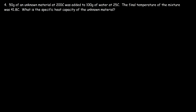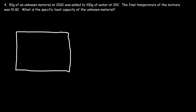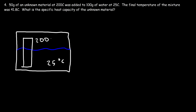Number four: 50 grams of an unknown material at 200 degrees Celsius was added to 100 grams of water at 25 degrees Celsius. The final temperature of the mixture was 41.8 Celsius. What is the specific heat capacity of the unknown material? Imagine we have a beaker of water currently at 25 degrees Celsius, and we place a chunk of material inside — this material is at 200 degrees Celsius. Heat is going to flow from the metal into the surrounding water. Heat flows from hot to cold.